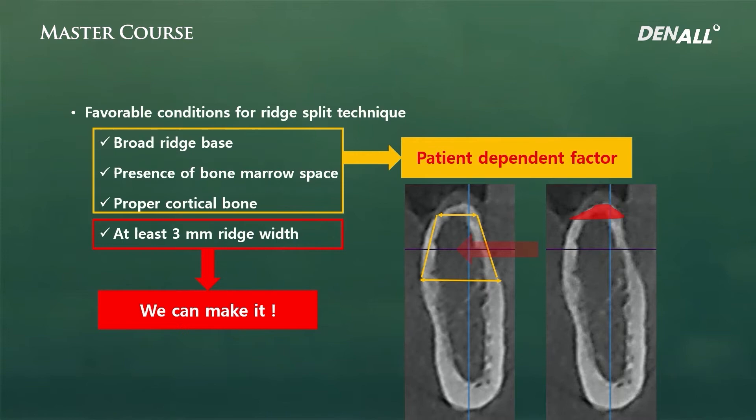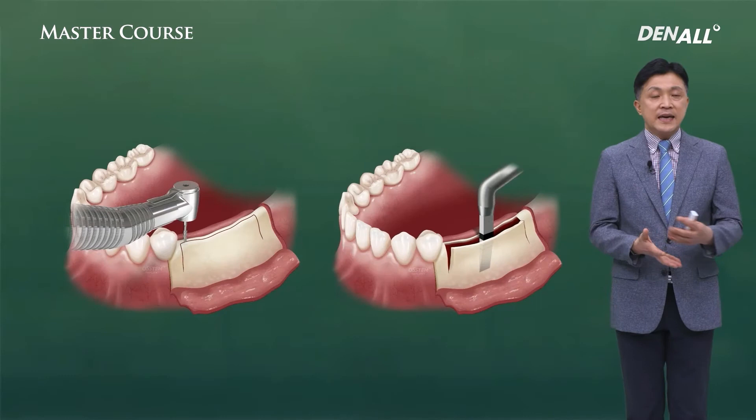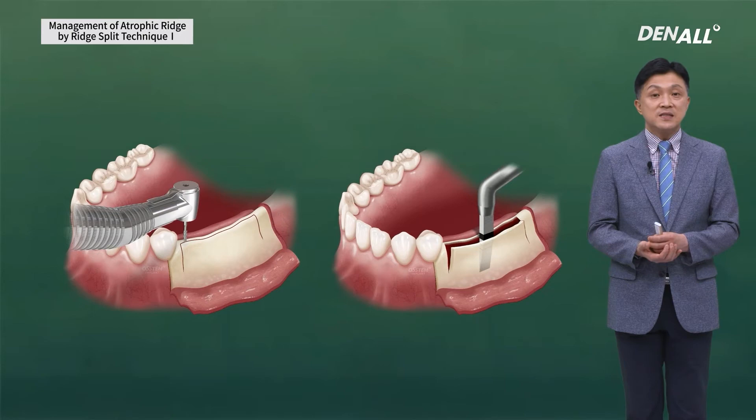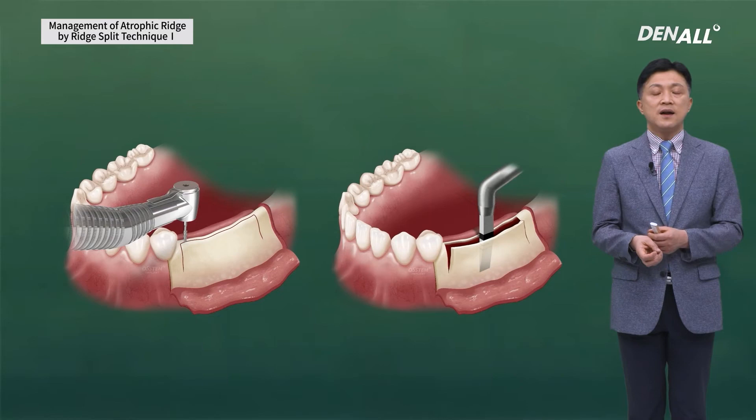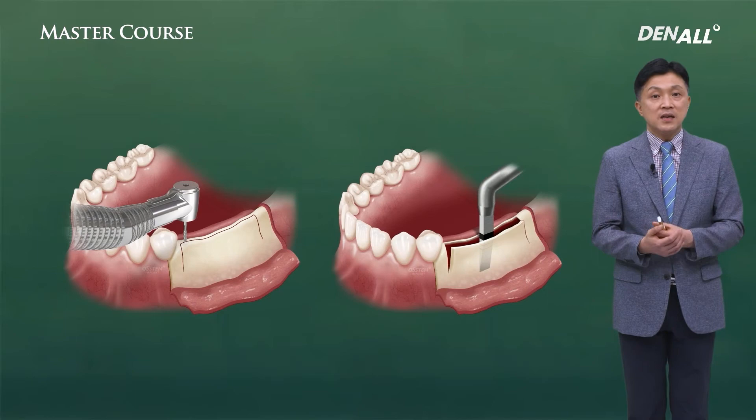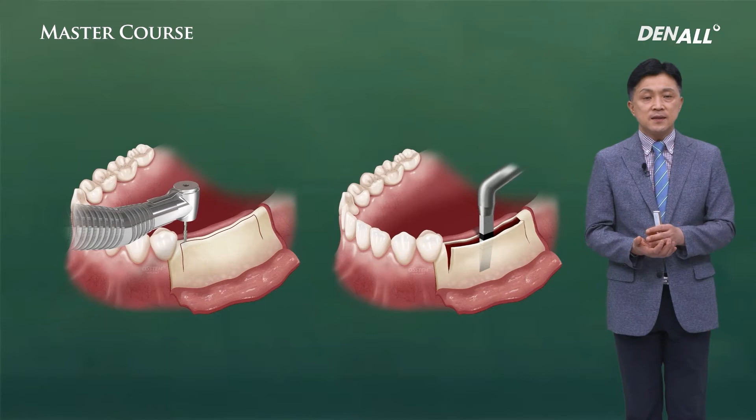If you use the asset kit to do ridge split, alveoloplasty can be very useful to achieve the necessary width. In the past, this kind of technique was used for ridge split: a high-speed burr and other tools were used for osteotomy, and a mallet or chisel was used to widen the ridge. This was how ridge split was done.